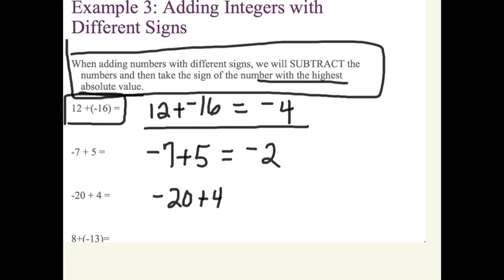Hopefully you got a negative 16. The larger looking number, the number with the largest absolute value is that 20. Therefore, the answer is going to be negative, just like the 20. And I subtract. Again, the signs are different.